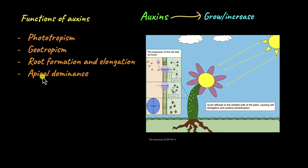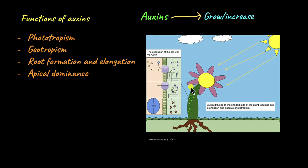Another major function of auxins is apical dominance. There are two types of meristems in a plant: the apical meristem at the tip of the shoot, and lateral meristems at the sides of the shoot. Apical dominance is when auxins cause the apical bud to keep developing while actively suppressing the growth of the lateral buds. This is why when people prune trees they often cut the tips — when the tips are cut, auxin production decreases, which then causes the growth of the lateral buds.